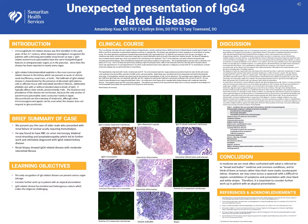Our poster is a case report on an unusual presentation of IgG4-related kidney disease. This patient presented with generalized weakness resulting in multiple falls, and was found to have renal failure of unclear acuity.